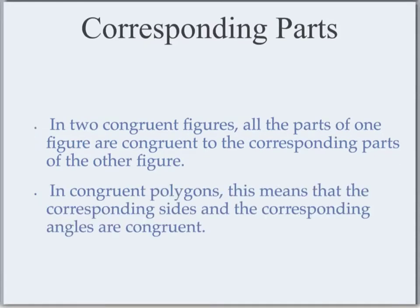In congruent polygons, this means that the corresponding sides and the corresponding angles are congruent. All sides of one have to be congruent to all sides of the other, and likewise all angles of one figure have to be congruent to all angles of the other figure.